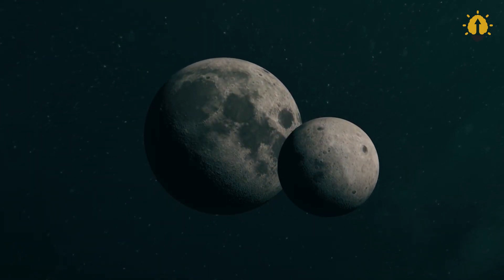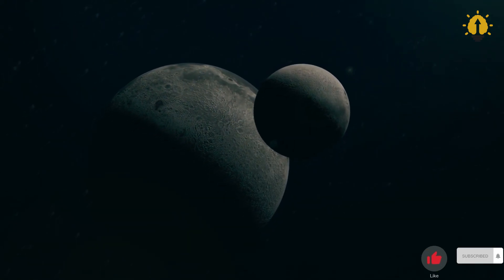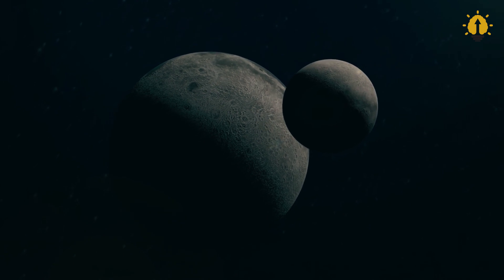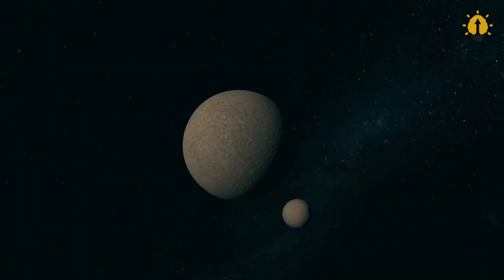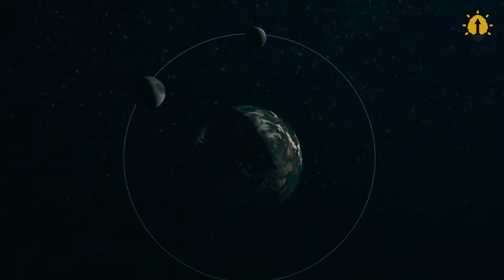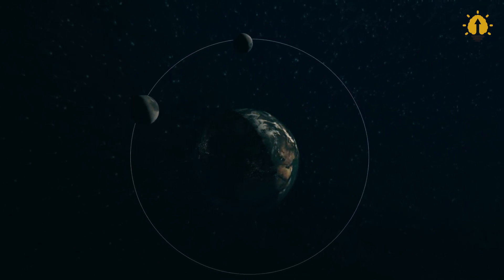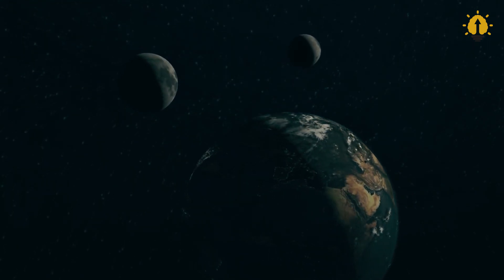According to the two-moon theory, those highlands on the dark side are leftovers from the smaller, less fortunate moon that had a cosmic collision course with our moon. Don't picture a Hollywood-style explosion. This was a more graceful encounter, happening at gentle, subsonic speeds. Sure, we can't say it's a proven fact just yet, but upcoming lunar missions could be the key to unlocking this lunar mystery. So, stay tuned for the lunar saga to unfold.